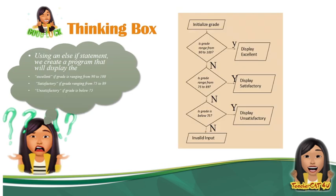This is the sample flowchart. Ang unang gagawin is initialize grade — maglalagay tayo ng grade o may value yung grade. Tatanungin niya: yung grade mo ba is ranging from 90 to 100? Pag yes, iti-display niyang 'excellent.' Pag no, bababa siya sa susunod na condition, tatanungin ka niya ulit. Yung grade ba nagre-range ng 75 to 89? Pag yes, iti-display niyang 'satisfactory.' Pero pag no, bababa ulit yan sa susunod na condition. Sasabihin niya: yung grade ba is below 75? Pag yes, idi-display niya ang 'unsatisfactory.'